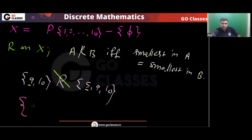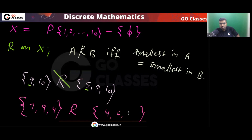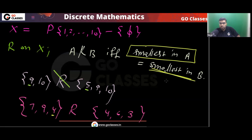What about {9,9,4} and {4,6,3} — is this related? In the first set the minimum is 4, in the second set the minimum is 3. Since 4 ≠ 3, this is also not correct.